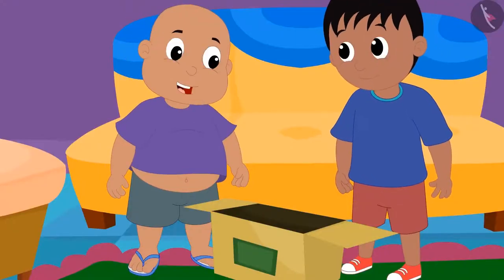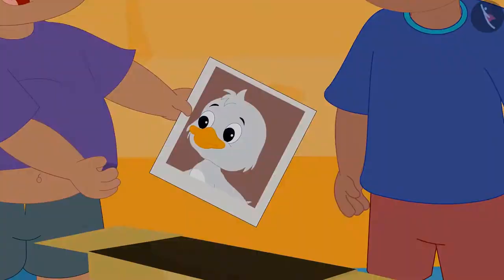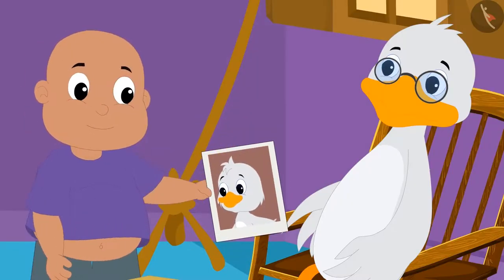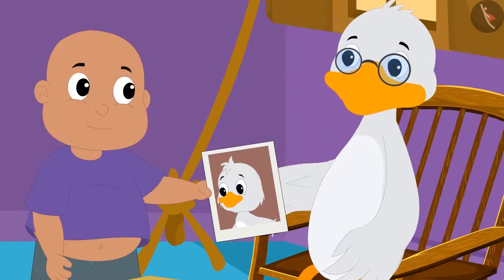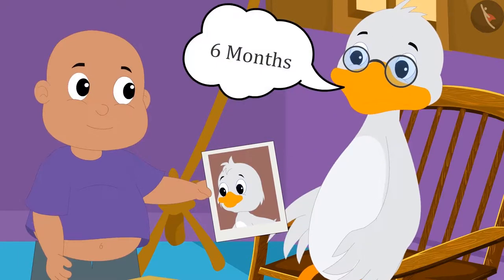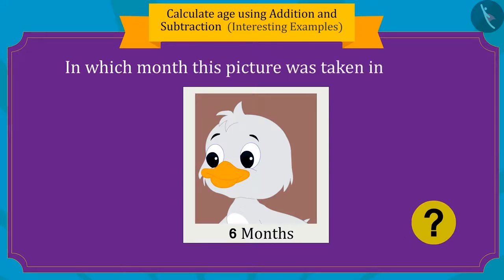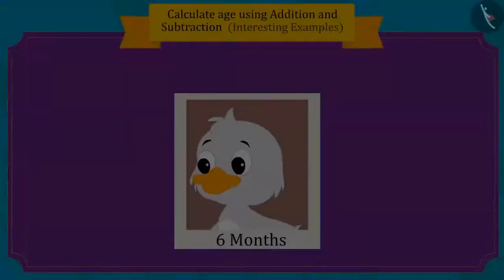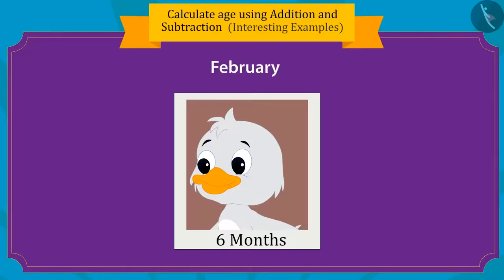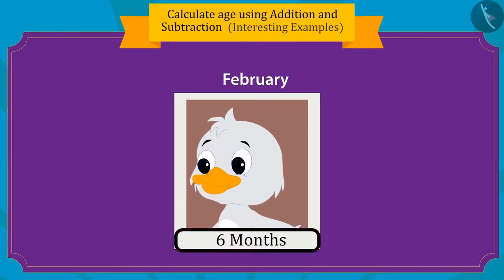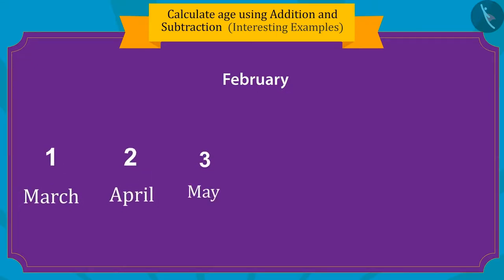Now Bablu found a picture of Uncle's childhood. When Bablu asked Uncle, it was revealed that Uncle was only 6 months old in this picture. Children, can you tell us in which month this picture was taken in 1962? Uncle was born in February, and this picture was taken 6 months from February. So, which month comes 6 months after February?